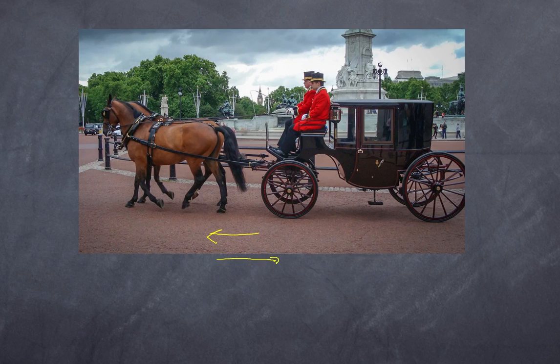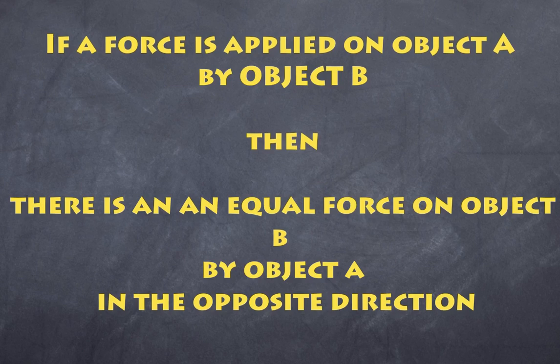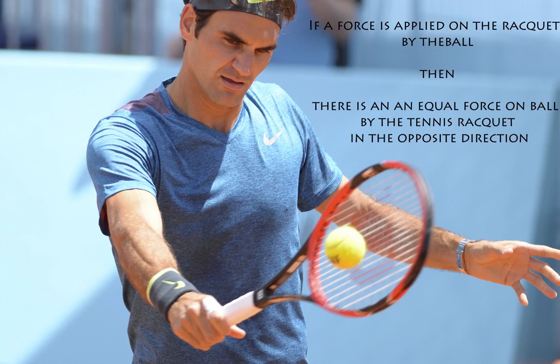In order to explain this and show the inaccuracy of that understanding, let's go through Newton's third law properly. I like to teach it this way: if a force is applied on object A by object B, then there is an equal force on object B by object A in the opposite direction. Rather than just talking about action and reaction, we understand forces as a force by something on something else.